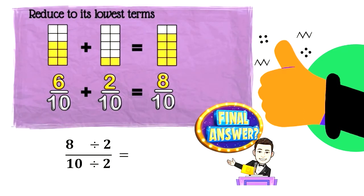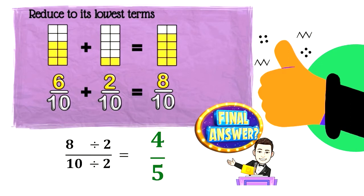Let us move on to reducing our fractions to their lowest term. Consider the sample problem: 6 over 10 plus 2 over 10 equals 8 over 10. Now, reducing it to its lowest term, we must check our answer to see if another number can be divided evenly into both the numerator and denominator. We continue the process until the fraction can no longer be reduced. Simplifying our answer, we now have 4 over 5.